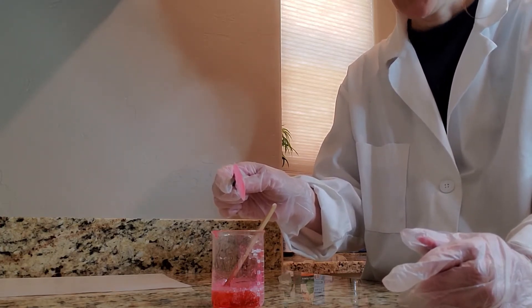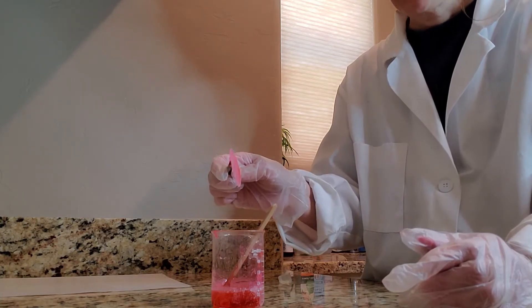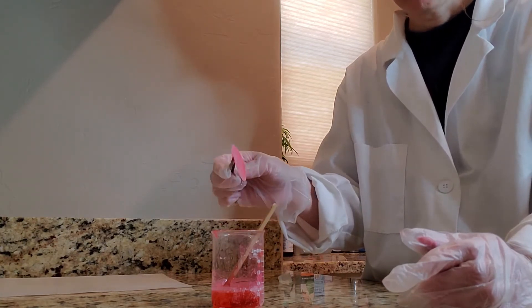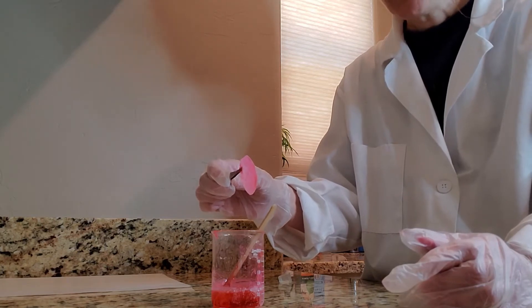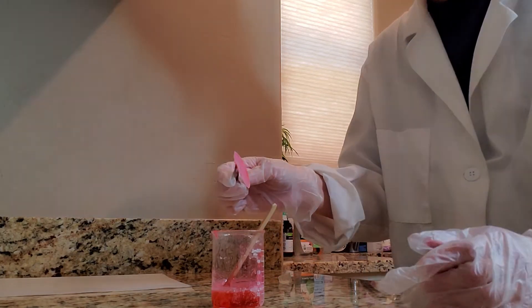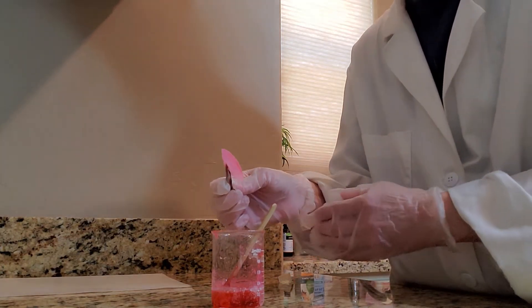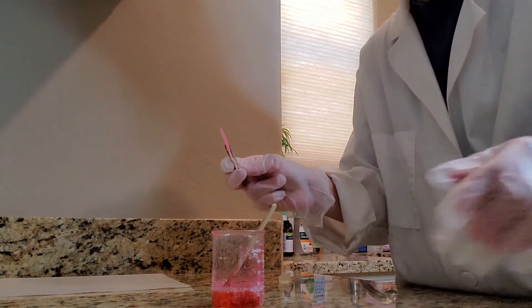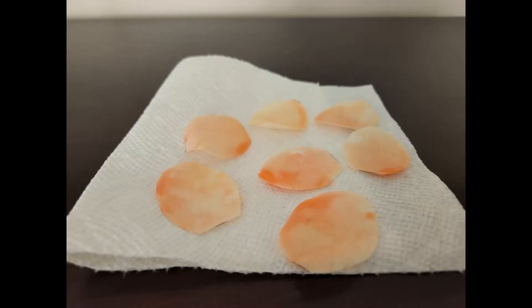And then once it's dry, you've got these beautiful soap papers. So I'm going to go ahead and let this dry. Here I am showing you a picture of the rose petals that I made. So I ended up just putting them on a paper towel, but you could use wax paper, paper plate, whatever you choose. I did this because I wanted to let them completely dry before use.